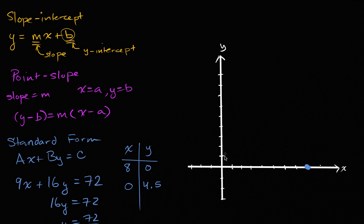And so we could plot that point as well. X is zero, y is 4.5. And just with these two points, two points are enough to graph a line, we can now graph it. So the line will look something like that. This is the line that represents all the x and y pairs that satisfy the equation 9x plus 16y is equal to 72.